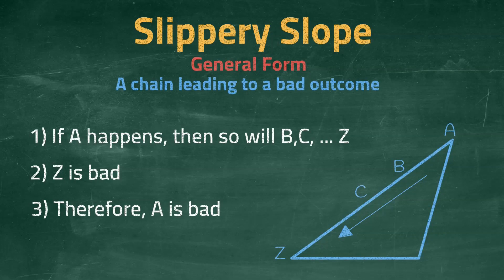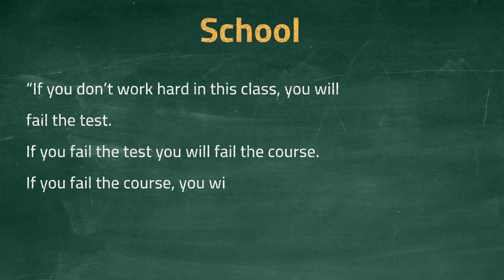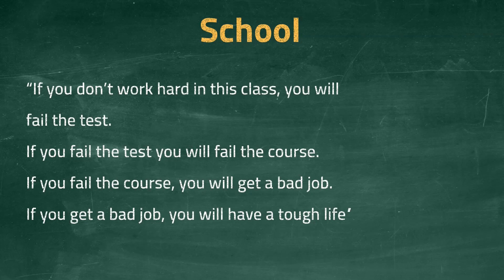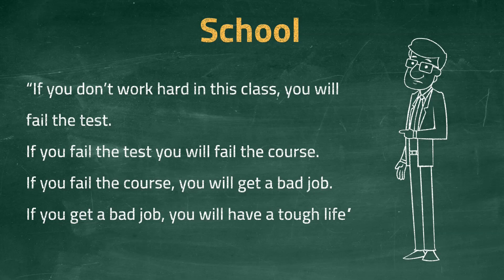Let's look at some examples of people using this argument. The first example concerns school. If you don't work hard in this class, you will fail the test. And if you fail the test, you will fail the course. If you fail the course, you will get a bad job. And if you get a bad job, you will have a tough life. This is a classic slippery slope argument. It begins with the rather insignificant concern of working hard in this class and ends in a much more disturbing concern of having a tough life. To see if it is fallacious, we need to assess each step individually. How likely is it that you will fail the test if you don't work hard? How likely is it that you will fail the course because you did badly in one test? Will you actually get a bad job if you fail this course? Is it possible to work hard in class and still end up with a tough life? It is obvious that not working hard in this class will not necessarily lead to a tough life.